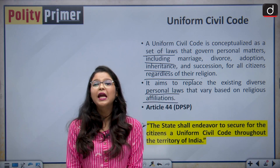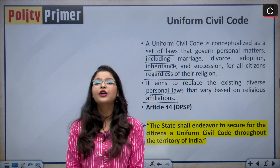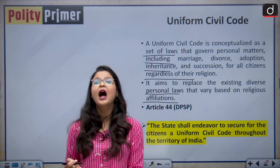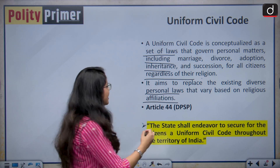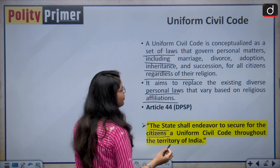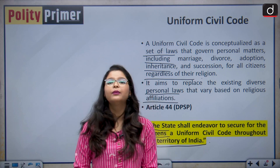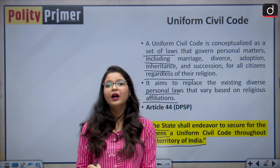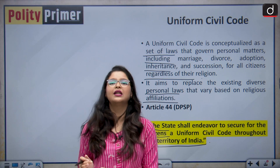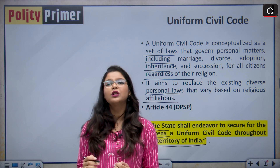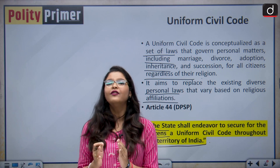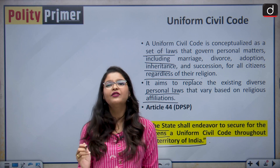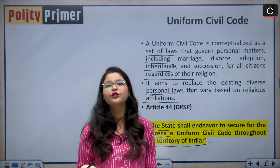The Uniform Civil Code aims to replace the existing diverse personal laws that vary based on religious affiliations and end these variations. If we talk about the constitutional aspect of the Uniform Civil Code, it is incorporated as a Directive Principle of State Policy under Article 44. Article 44 states that the state shall endeavor to secure for the citizens a uniform civil code throughout the territory of India. Article 44 was inserted with the aim to end discrimination against vulnerable groups and to bring unity among the various cultural groups in India. Uniform Civil Code in India is still a dead letter — it is still a proposal only and it is still very controversial.